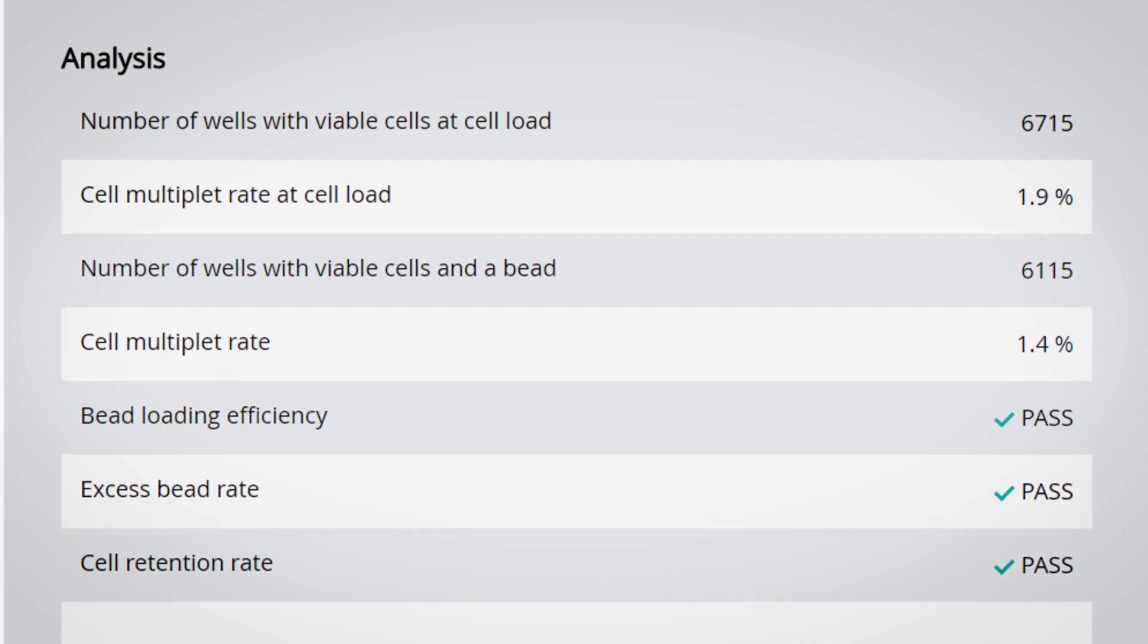However, if a large portion of the cells were lost at this stage, indicated by a not-passed cell retention rate metric, the experiment can be stopped and sample pre-processing can be further optimized.